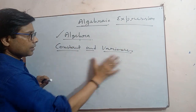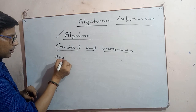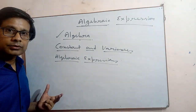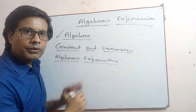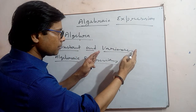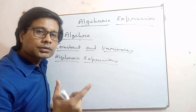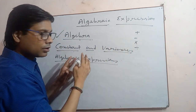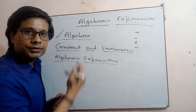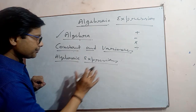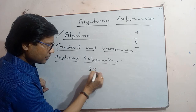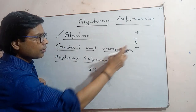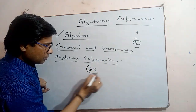After discussing constants and variables, we talk about algebraic expressions. When you combine constants and variables together and connect them using basic mathematical operations — plus, minus, multiply, divide — that combination is called an algebraic expression. For example, 3x: here 3 is the constant, x is the variable, and the implied operation between them is multiplication. So 3x is an algebraic expression.